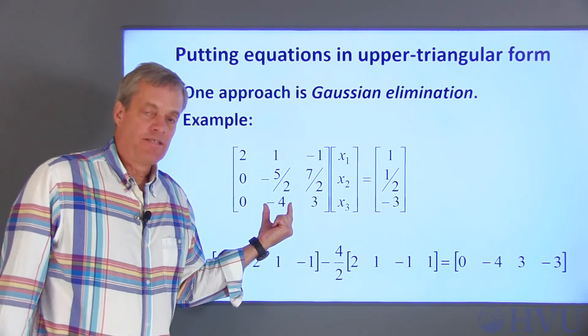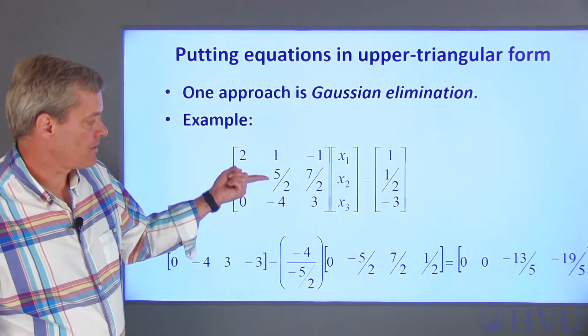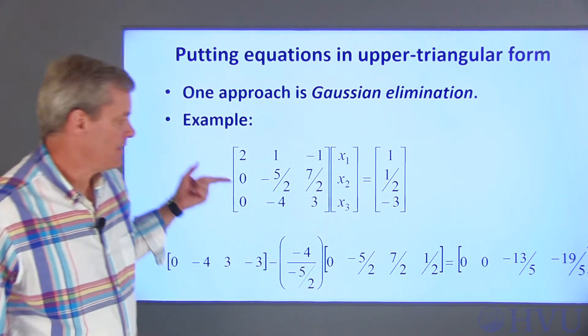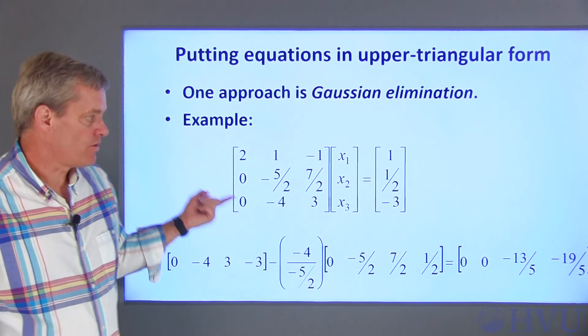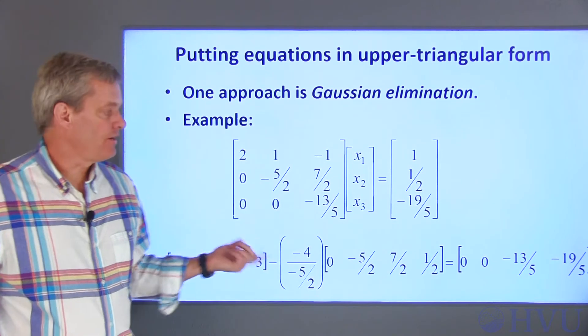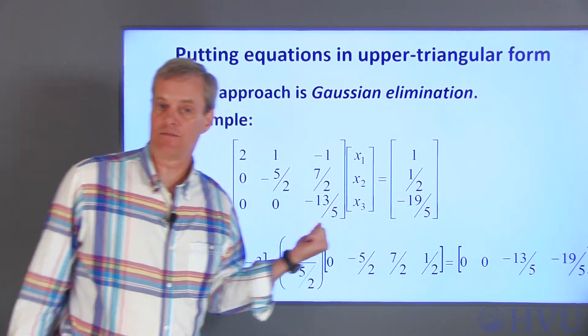Now I want to get rid of this negative 4 and replace it with a zero. I do the same process between this row and this row. So, negative 4 over negative 5 halves times this row, subtracted from this row, puts a zero here. Now the matrix is upper triangular and I can use back substitution to solve for x1, x2, and x3.